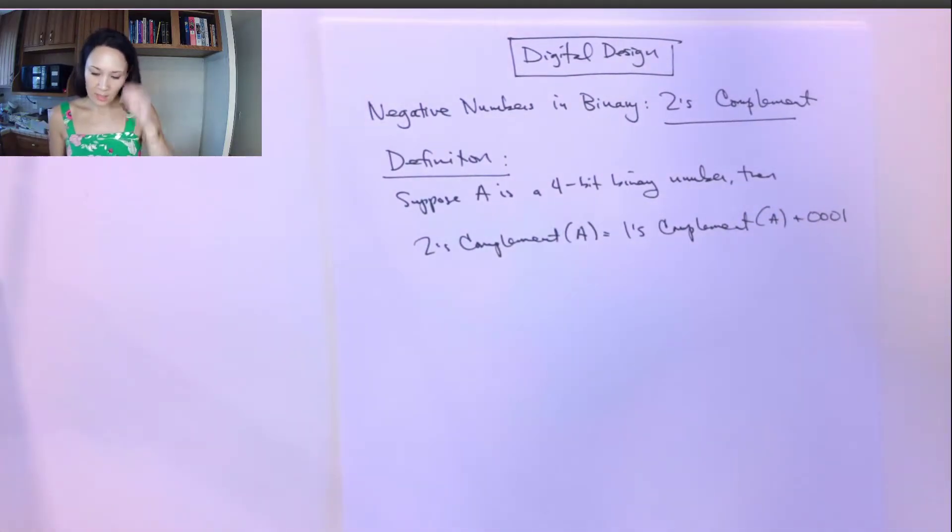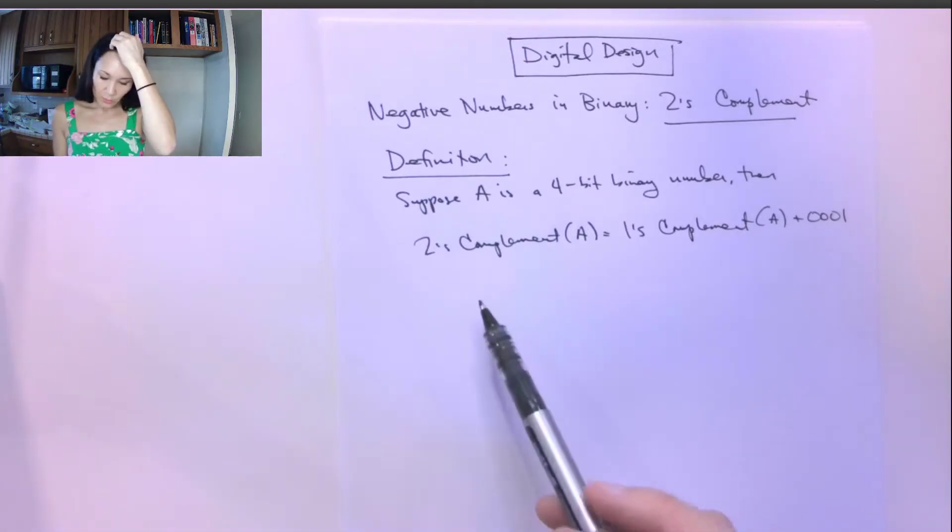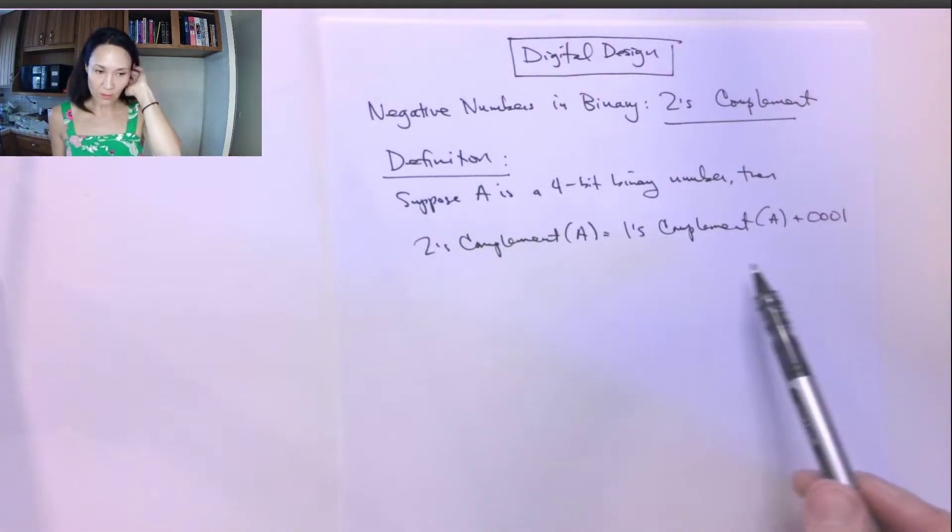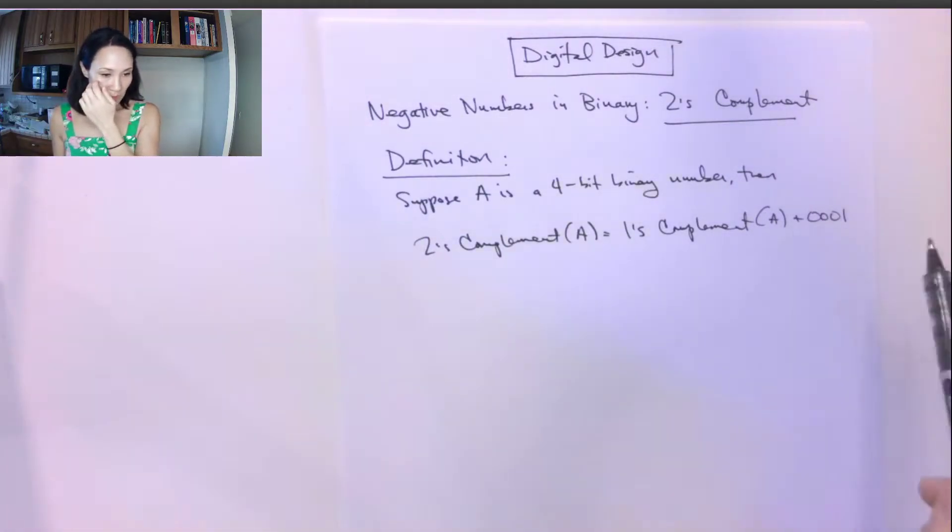Suppose A is a four-bit binary number. Then two's complement of A would be one's complement of A plus one. So what does this mean? In order to represent a negative number in two's complement form, first we invert all of our binary bits, and then we add one to the least significant bit.